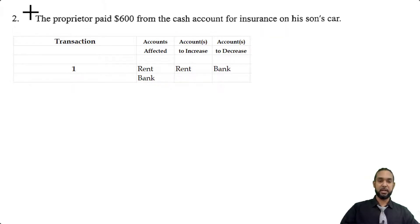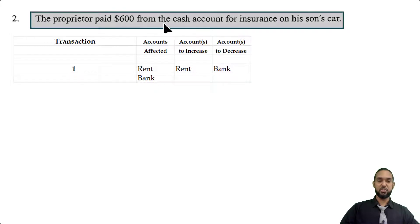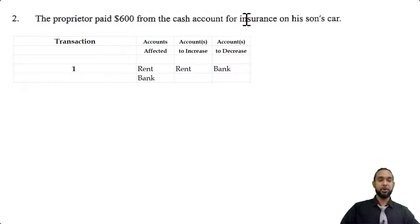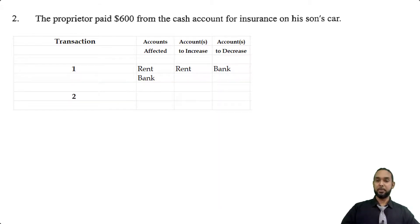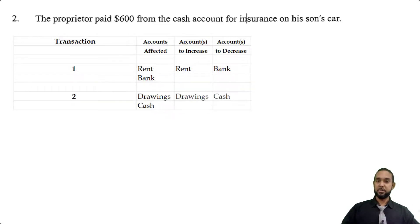Transaction two: the proprietor paid $600 from the cash account for insurance on his son's car. Cash is being taken out of the business for the owner's personal use — that's drawings. Accounts affected are cash and drawings. Drawings is increasing and cash is decreasing.